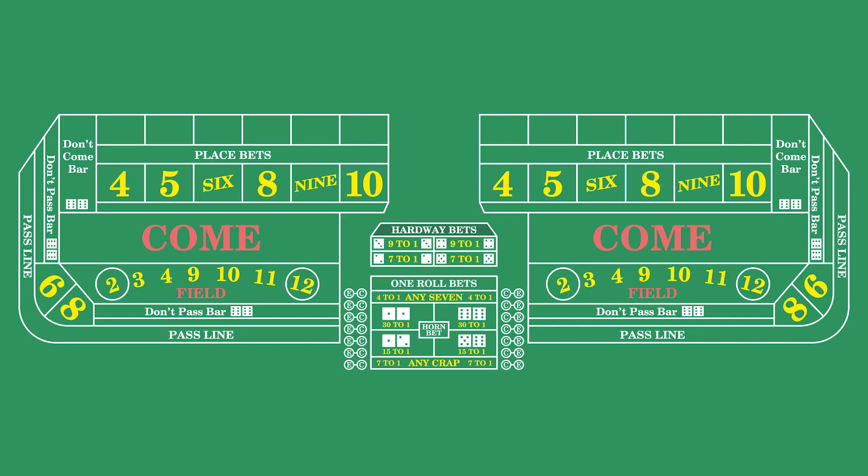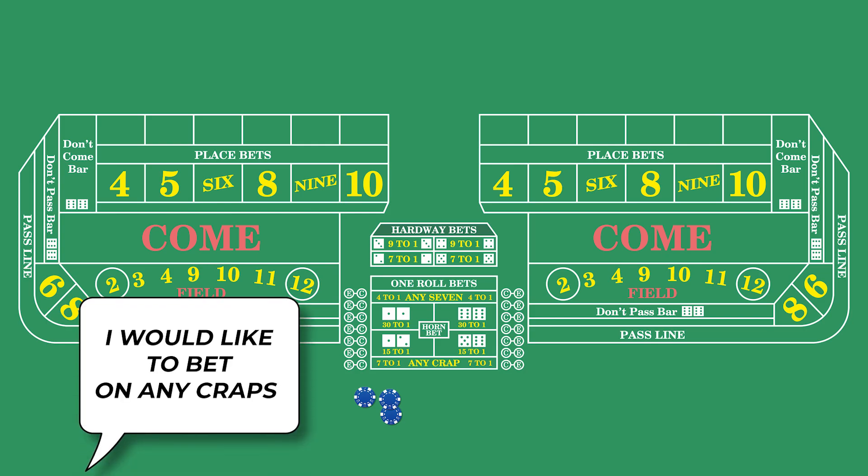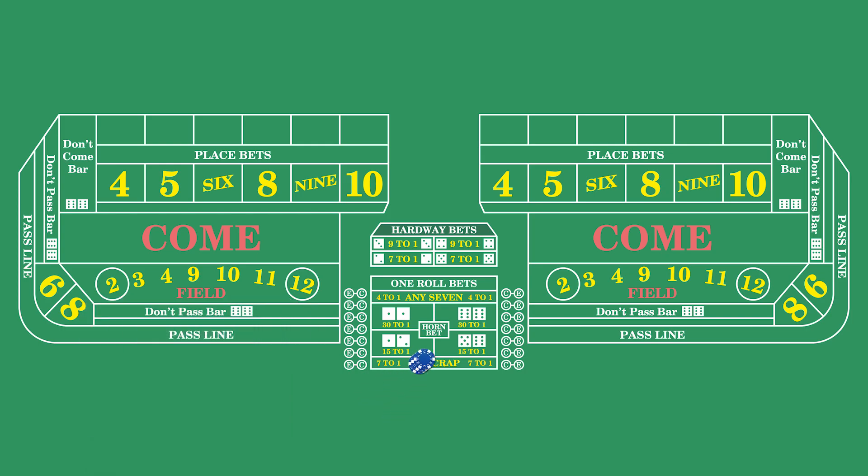When it's your turn to bet, simply toss your chips onto the table, just short of the prop bet section, and inform the stickman that you would like to bet on Any Craps. The stickman will then take your chips and move them to the designated Any Craps betting area, ensuring that your bet is properly placed.